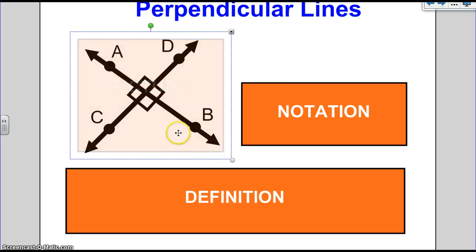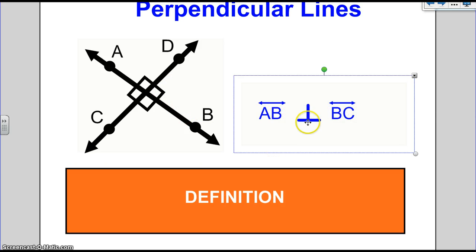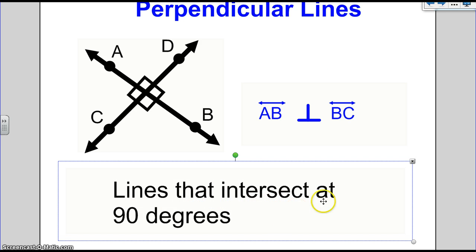Perpendicular lines. I have a little box here. Shows me that they're 90 degree angles. This is the notation. This little upside down T means perpendicular. And the definition. Lines that intersect at 90 degrees.